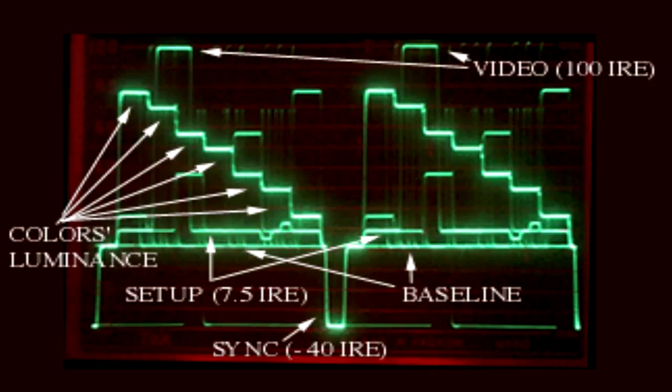That's how we would align with our waveform monitor and vector scope. All these components would be used to align our signal so that it was always correct all the time when it went out on air.